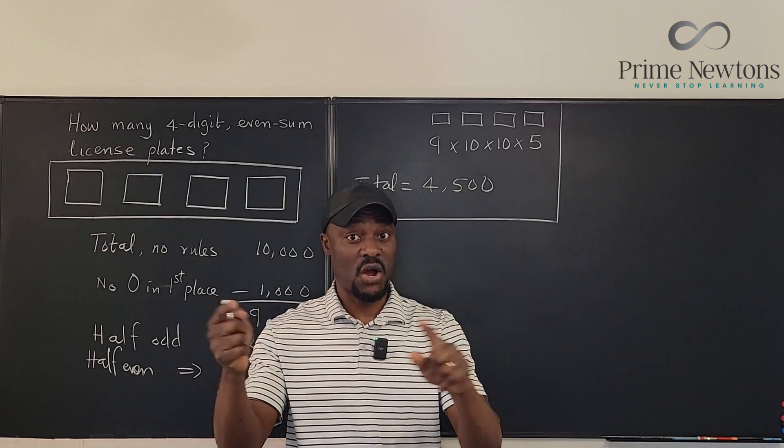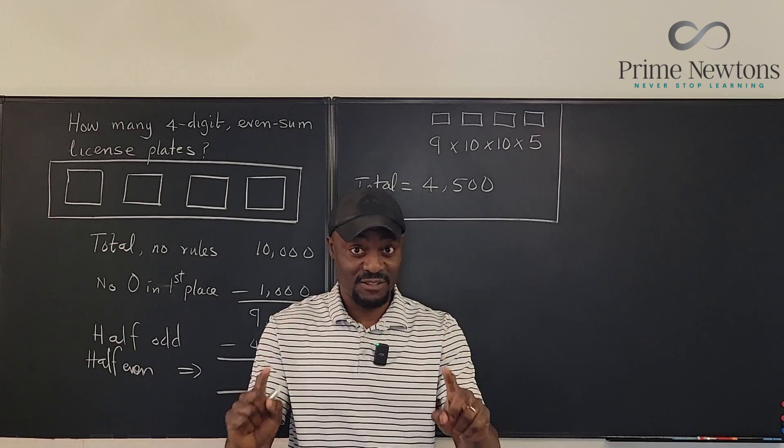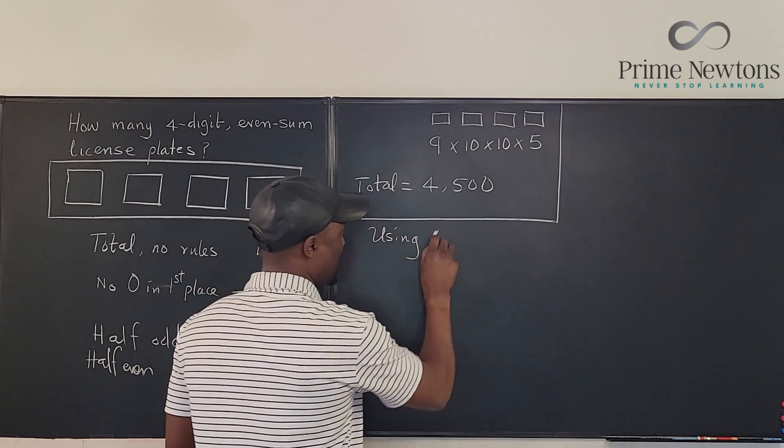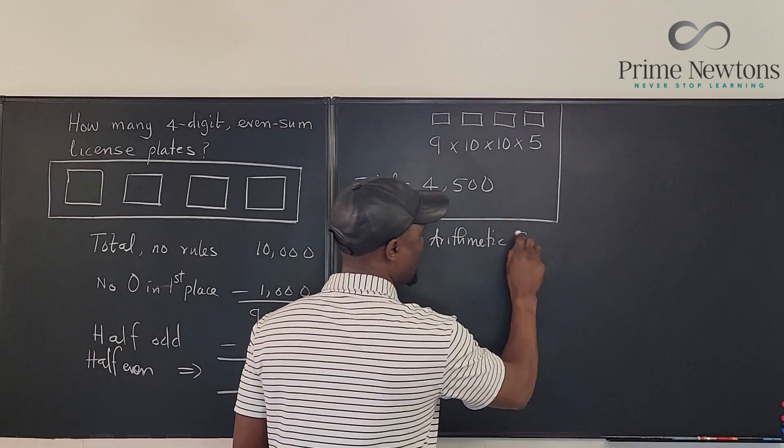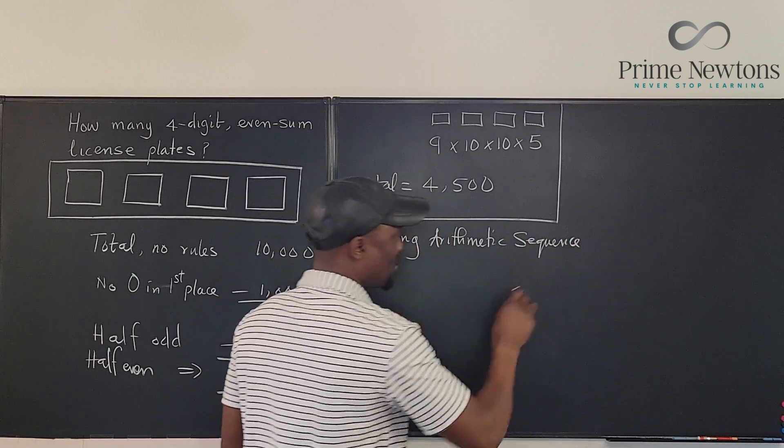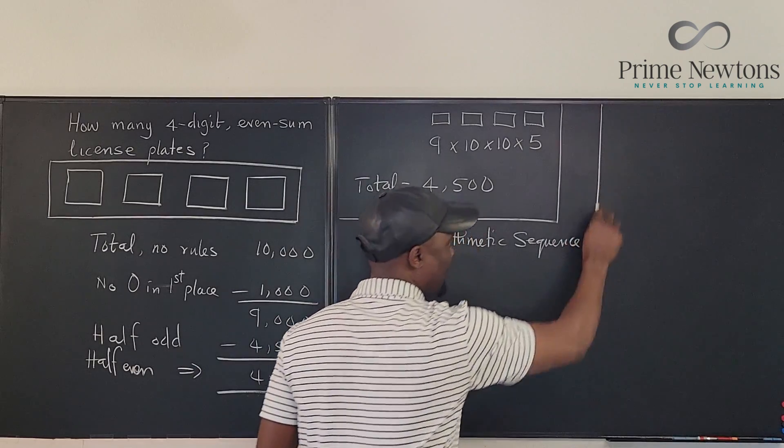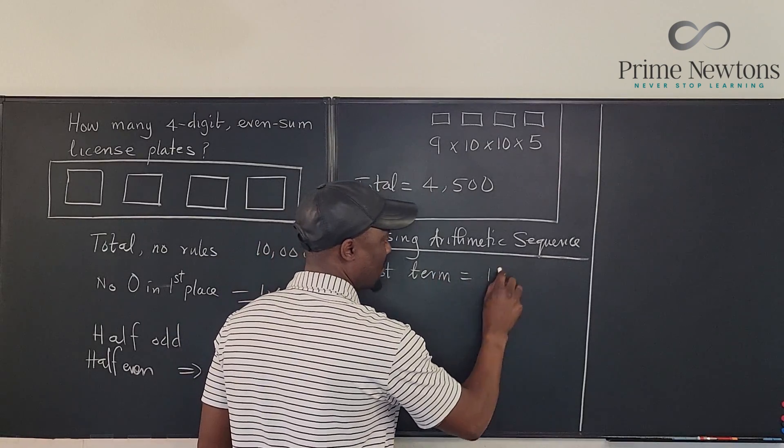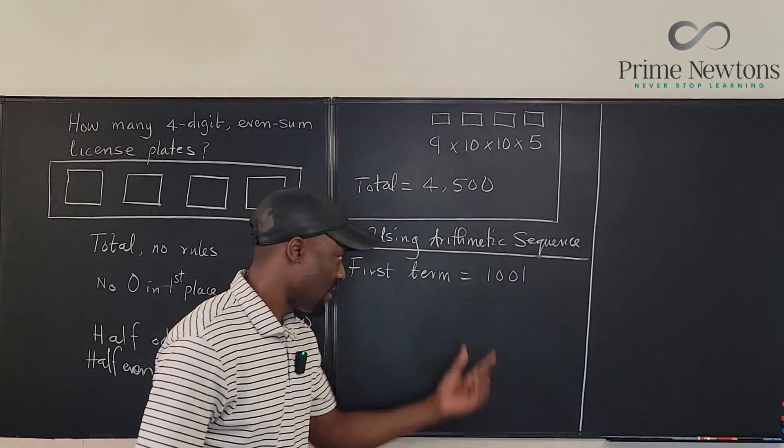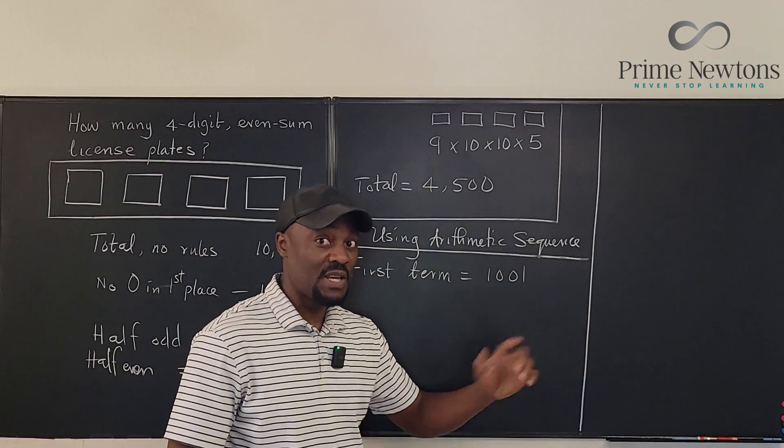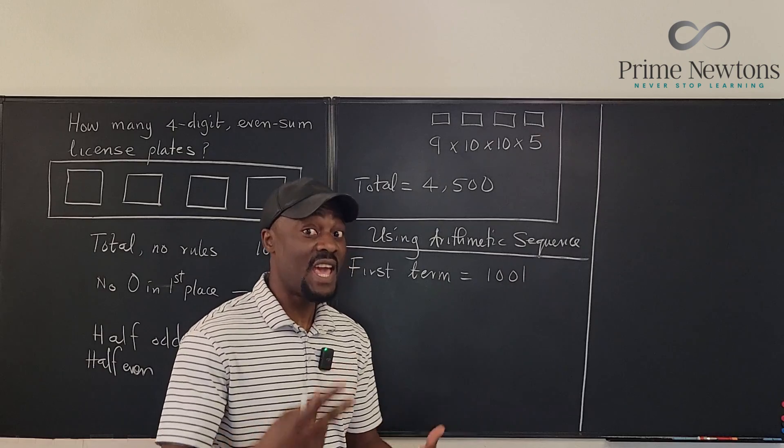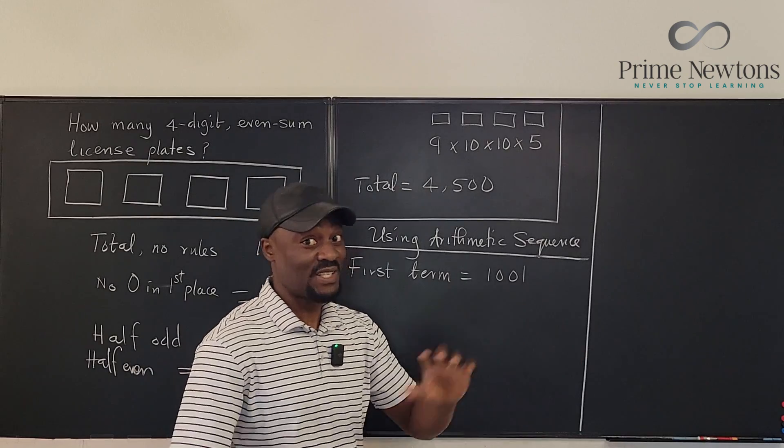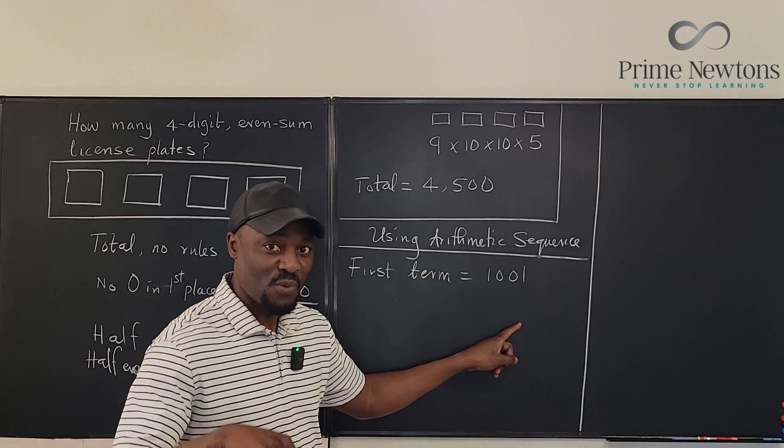because when you add those up, you're going to get an odd number. It's 1. So the smallest license plate sum is going to be 2, because the first license plate using arithmetic sequence. So we're going to say, let's block this off. The first term is 1,001. This is an acceptable license plate. 1,002 is not acceptable. 1,003 is acceptable because this one will give us a sum of 2, which is even. 1,002 will give us a sum of 3, which is not even.